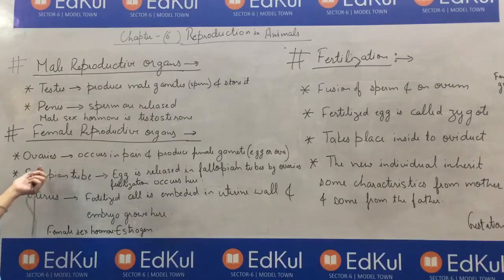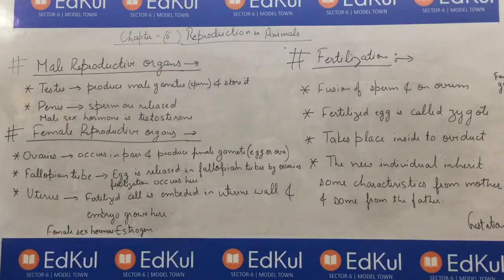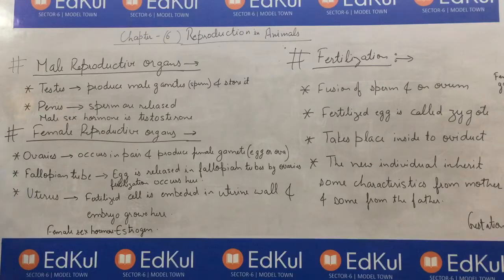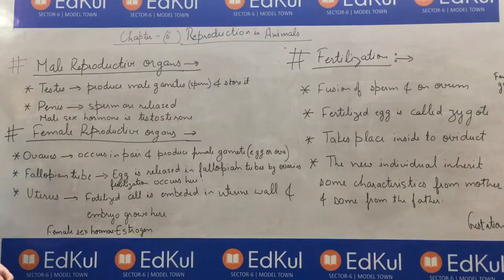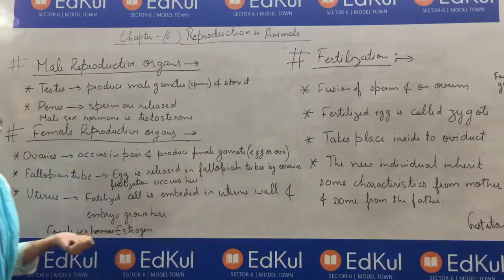Now, female reproductive organs. On the next page, the female reproductive system diagram is given. You can see it has 3 parts: ovaries, fallopian tubes, and uterus. Ovaries occur in pairs and they produce the egg cell, which is the female gamete.